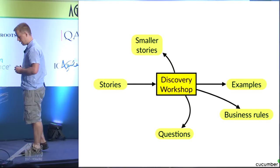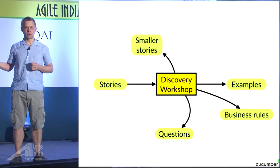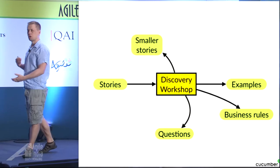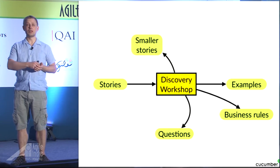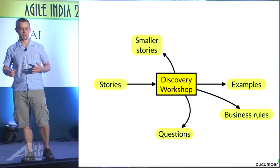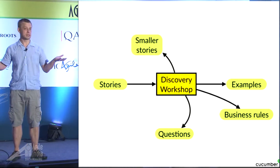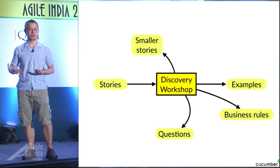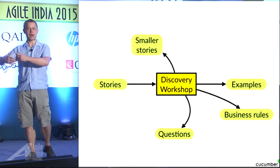Another thing that happens is that you can create smaller stories. For some stories, you'll get a lot of examples, or you'll realize that there are so many different rules. When you see lots of examples and lots of rules, that's an indication that this is a big story and you can break it up into smaller chunks.